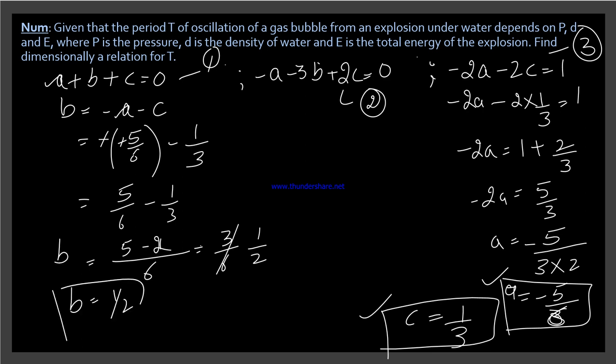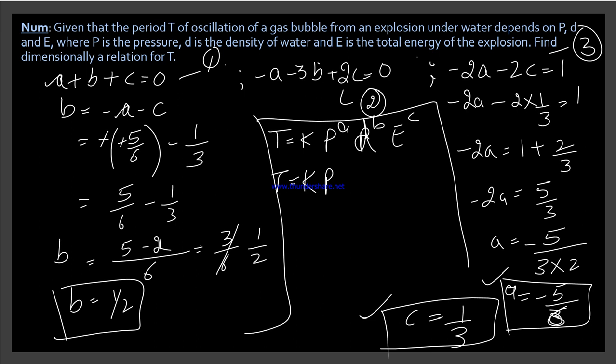Now put a, b, c in equation number 1. What was your equation number 1? So your equation first was T equals K P raised to power a, d raised to power b, E raised to power c.